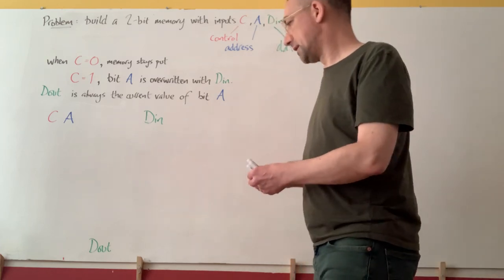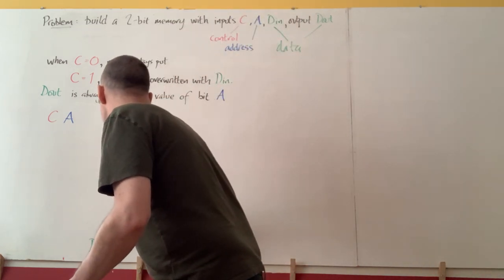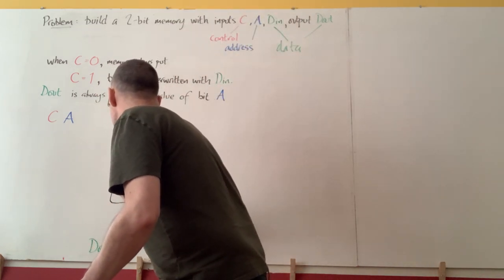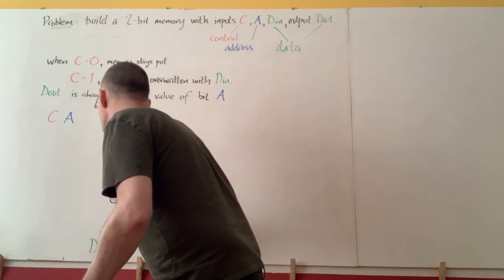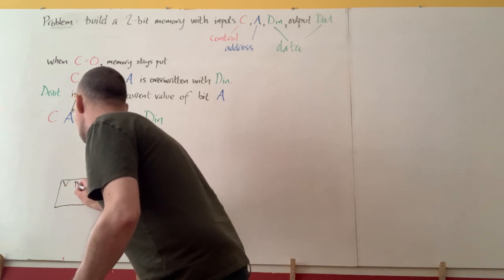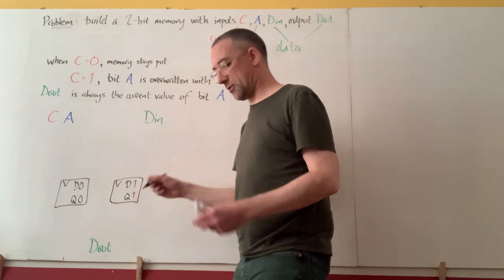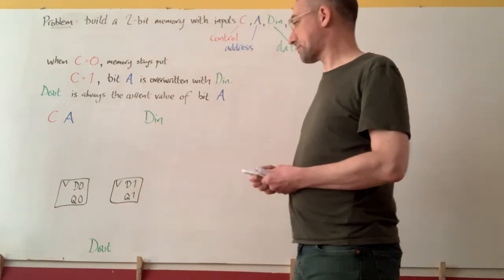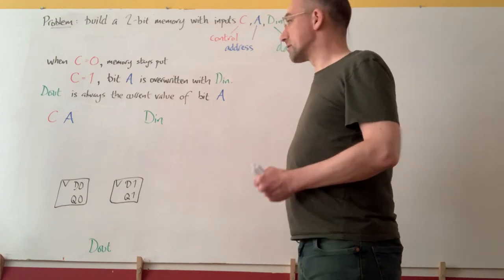So what's going to happen in this picture is that we will have two D flip-flops representing the contents of memory locations zero and one. And let's deal with the output first of all.